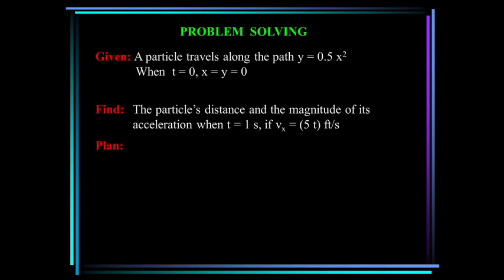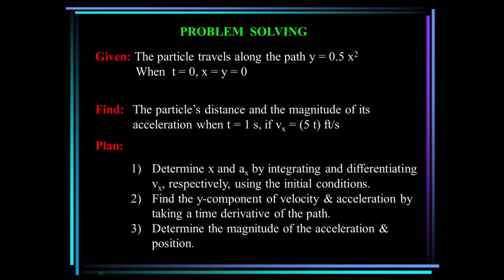A particle travels along the path y equals 0.5x squared. Initial conditions at time zero: x and y are both zero. We want to find the particle's distance and the magnitude of its acceleration at t equals 1 second, given that v_x equals 5t. We'll integrate and differentiate v_x to get x and a_x, then use the chain rule to find the y components, and finally determine the magnitude of acceleration and position.